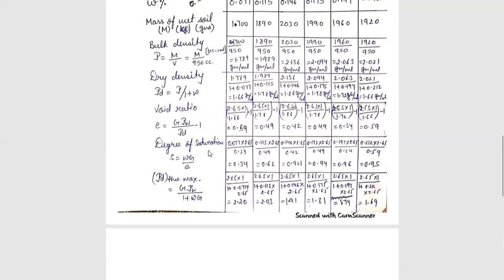We will ask degree of saturation. Degree of saturation is S equals WG upon E. We have calculated E here. W is given already. G is given here. We will keep values here and our degree of saturation will easily find out. The next is rho d theoretical maximum. The formula is G rho w upon 1 plus W.